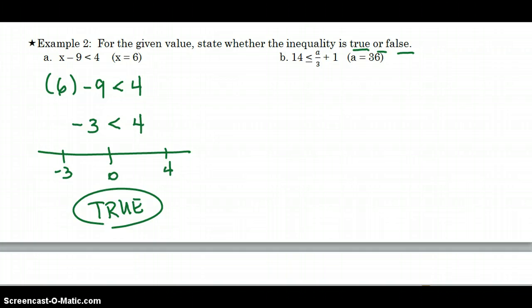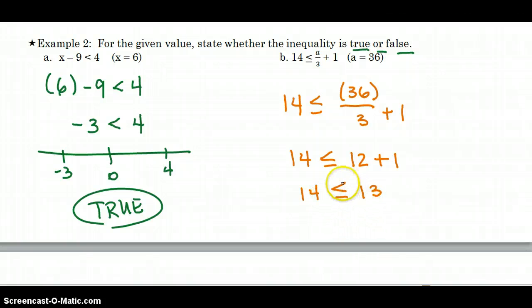The next question says, if X is 36, is this inequality true? So let's plug in. In place of A, we're going to plug in 36. And when you divide 36 by 3, you get 12. And 12 plus 1 gives us 13. And I think we already know that 14 does not equal 13, nor is 13 greater than 14. Because on our number line, it'll go 13 and then 14. So 13 is not greater than or equal to. That is not a true statement. So you'll write the word false as your answer.